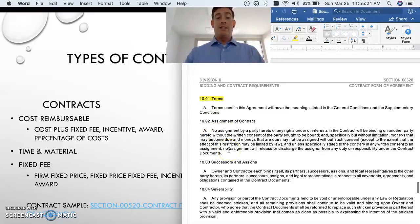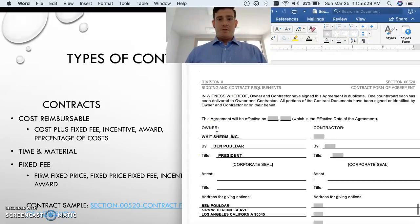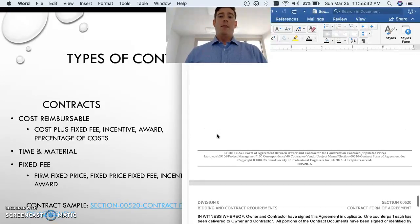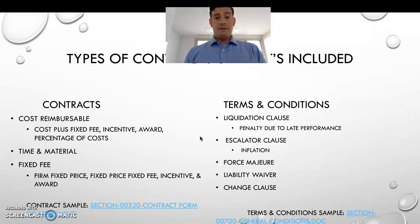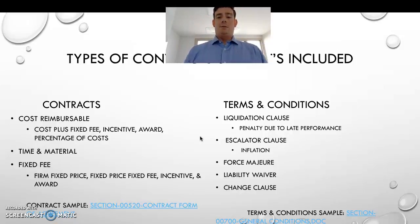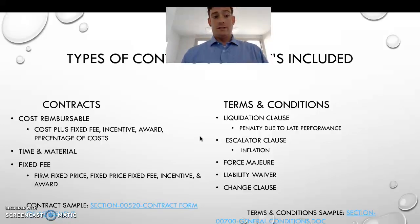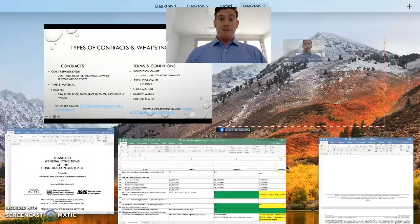Terms are a key portion of a contract - certain words are used and everyone has to understand what they mean. Assignment of contracts, successors and assigns, severability. Terms and conditions include the liquidation clause, escalator clause, force majeure, liability waiver, and the change clause. Force majeure is something out of control of both parties - neither one's fault - such as natural disasters and so forth.